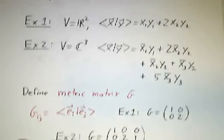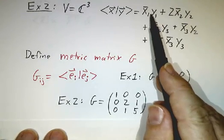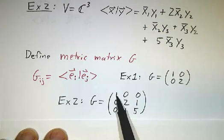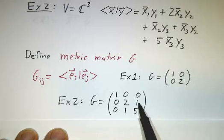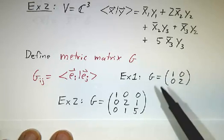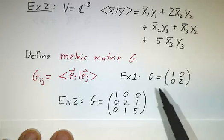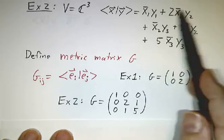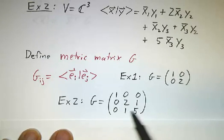In the second example, the metric matrix is a little bit wilder, but you can read off from the terms. This term gives you this 1, this term gives you this 2, this term gives you this 1, this term gives you this 1, this term gives you this 5. If you let x be e1, e2, or e3, and y be e1, e2, or e3, where these are the standard basis elements, you compute the inner product using this formula, and you get the matrix entries.